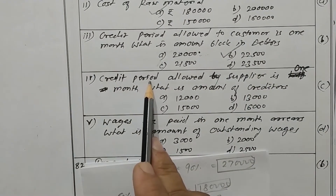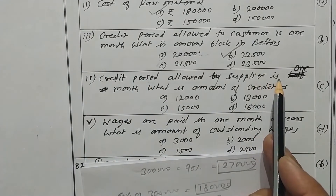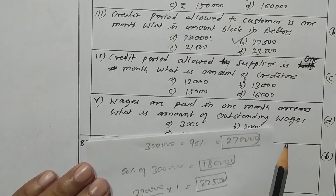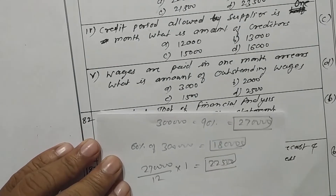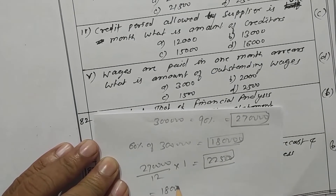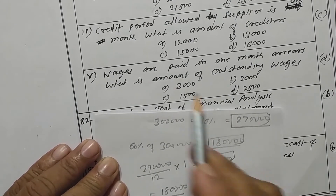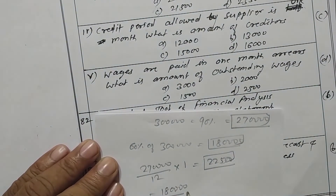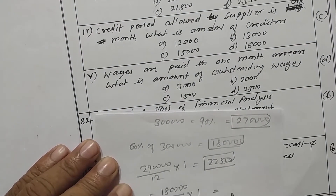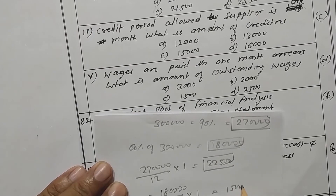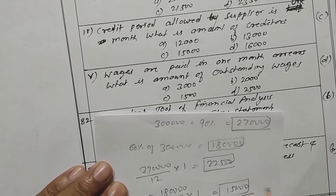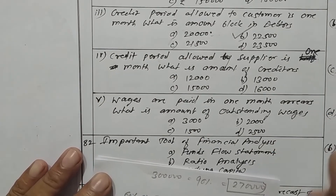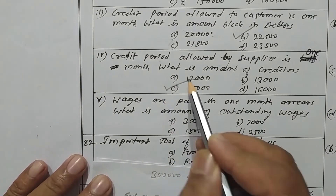Credit period allowed to supplier is one month. For creditors we use purchase of raw material. Raw material is rupees 1,80,000, so monthly purchase is rupees 15,000. Divided by 12 into 1 gives rupees 15,000 as creditors. Option C is the correct one.